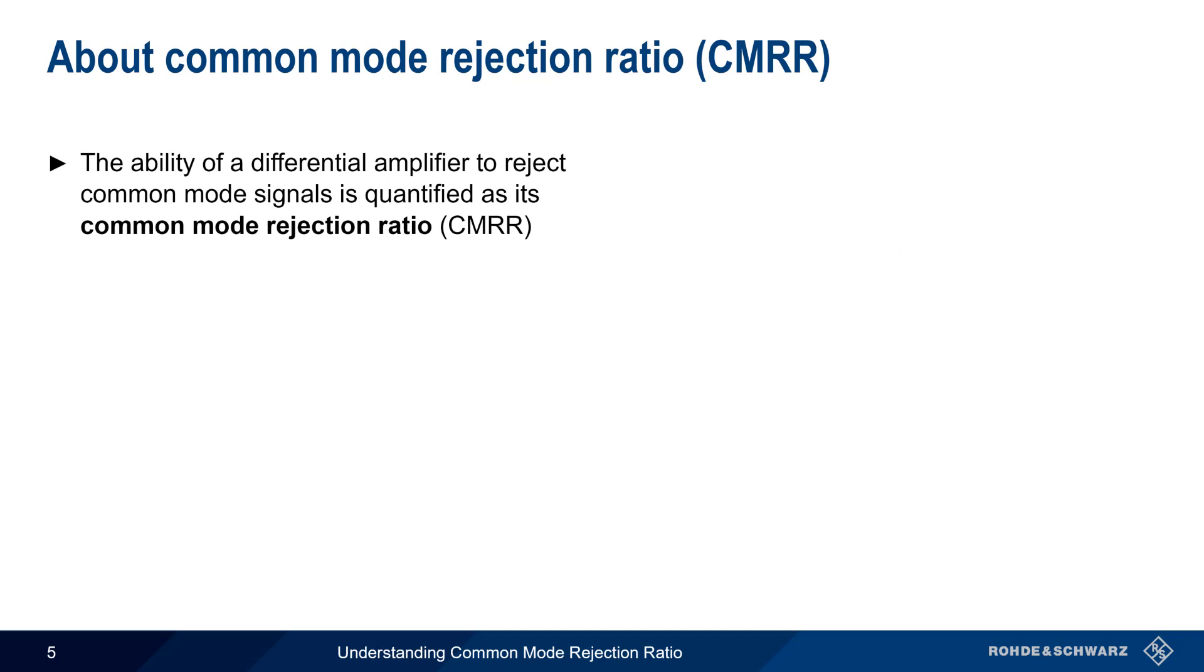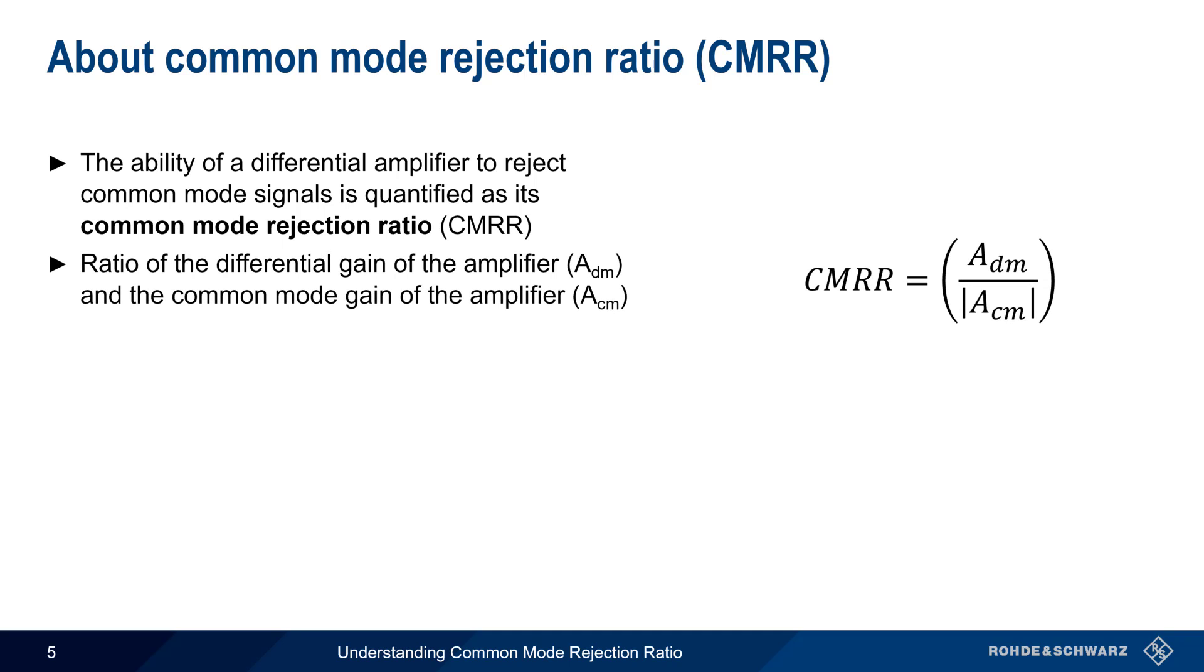We can describe the ability of a differential amplifier to reject common mode signals using something called the common mode rejection ratio. Mathematically, this is the ratio of the amplifier's differential mode gain to the amplifier's common mode gain.